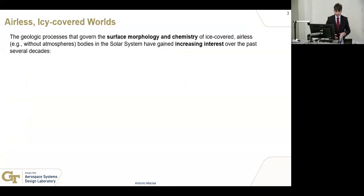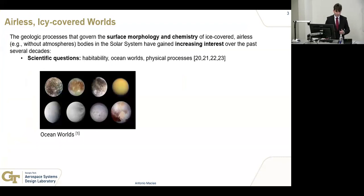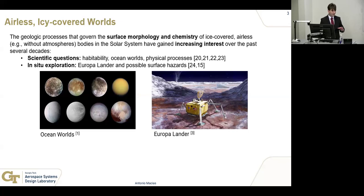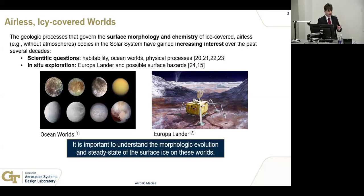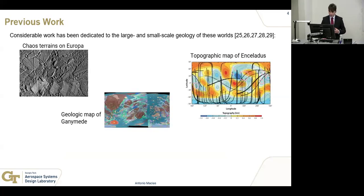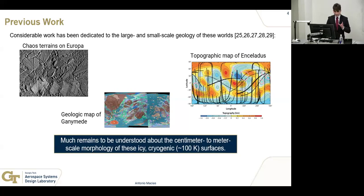The geologic processes governing the surface and chemistry of airless, ice-covered bodies in the outer solar system have generated increasing interest over the past several decades — both for the scientific questions these worlds present and for future in situ exploration. Though we have engineering capabilities like terrain-relative navigation to land on other worlds like Mars, it's nevertheless important to understand the current state of surface ice. Much remains to be understood about the centimeter-to-meter-scale morphology — much smaller than what's addressed by existing large-scale geology work on chaos terrains of Europa or topographic maps of Ganymede.